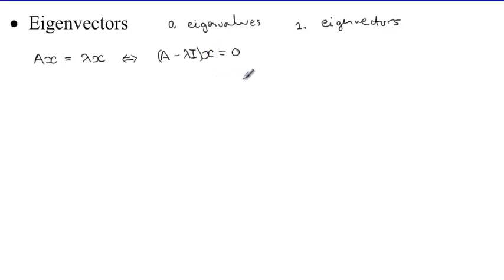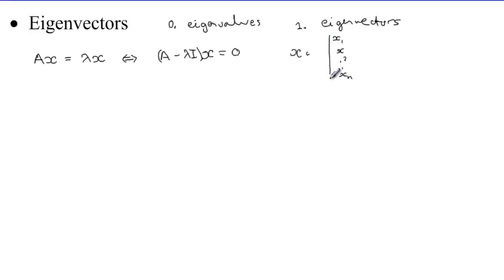We mentioned before that this equation actually generates a system of equations. Now let's say x was a column vector with components x1, x2, up to xn. We have to do this multiplication, which means that this vector xn has got n rows, which means the matrix A, or the matrix A minus lambda times the identity, must have n columns.